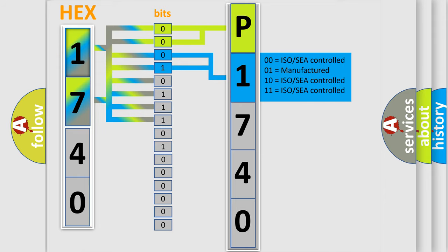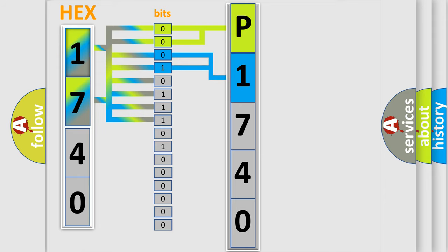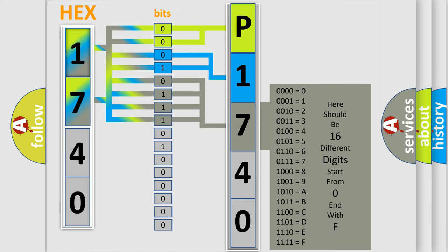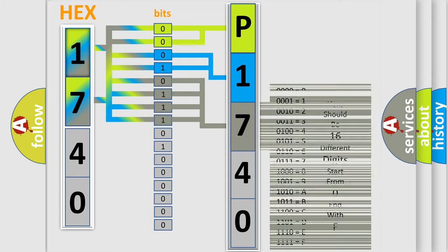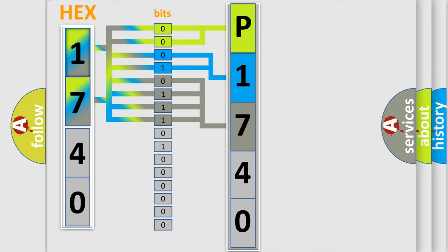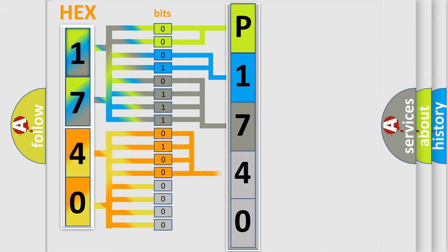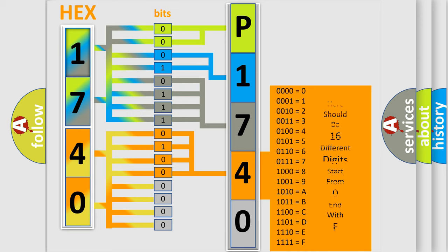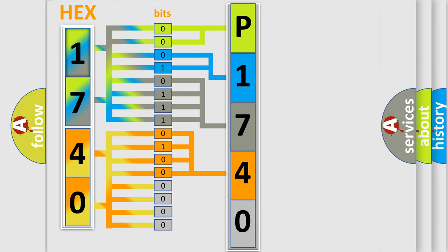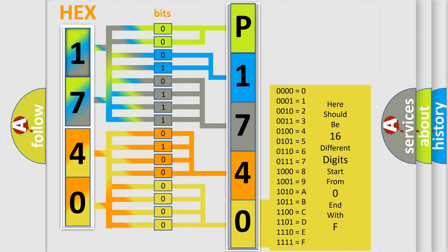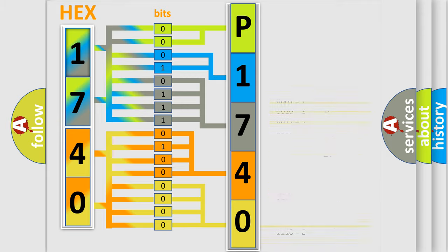The last bits of the first byte define the third character of the code. The second byte is composed of a combination of eight bits. The first four bits determine the fourth character of the code, and the combination of the last four bits defines the fifth character. A single byte conceals 256 possible combinations. We now know how the diagnostic tool translates the received information into a more comprehensible format.